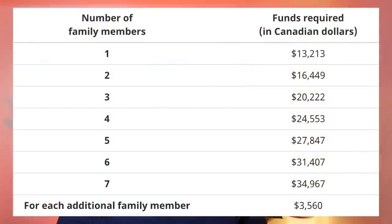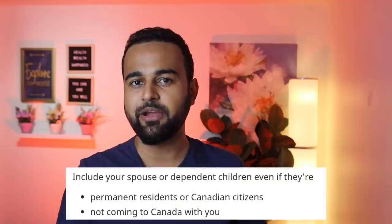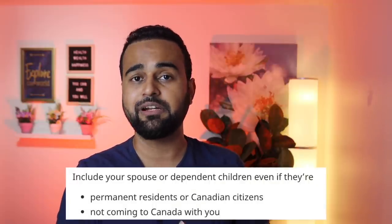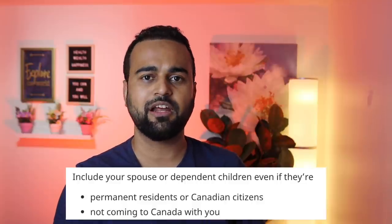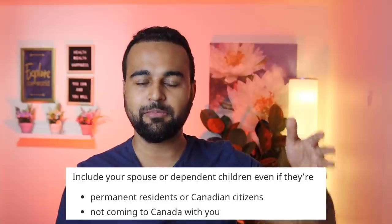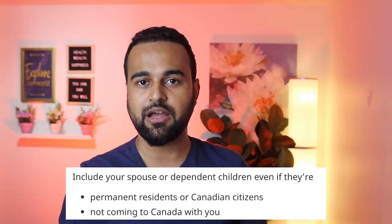So what is the amount now required for proof of funds? If you're single, it's 13,213 Canadian dollars. If you are a couple or two people, then 16,449. If you are a family of three, then 20,222, and it goes up from there. Importantly, they have specifically mentioned that you should include your spouse and children even if they are already a permanent resident or are not coming with you — include them and then check the table to see how much money you actually need.